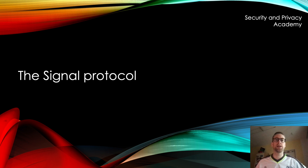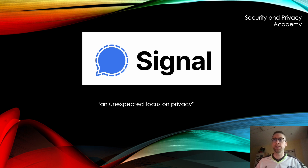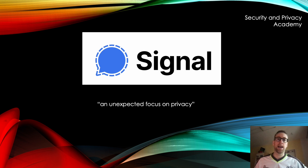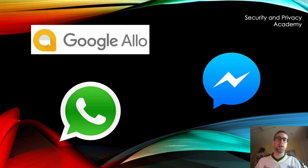Hello everyone, this is Patrick from Security and Privacy Academy. Today we are talking about the Signal protocol, so let's jump into it. Most of you know Signal — it's a mobile messenger app that markets itself as having an unexpected focus on privacy, which is a direct quote from the website. Signal is also the name of the underlying protocol the Signal messenger uses, and this protocol has been subsequently used by WhatsApp, Facebook Messenger, and Google Allo in order to market themselves as being more privacy-preserving. But what makes the Signal protocol so secure? Let's take a look at how it works.